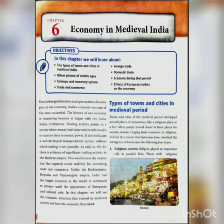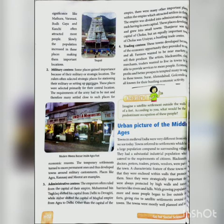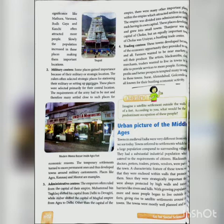The first type is religious centers. Religion played an important role in people's life. Places with religious significance like Madura, Varanasi, Budhagaya, and Kanji often attracted more people. Slowly the population increased in these places, making them important locations. People liked to settle around these religiously important places.